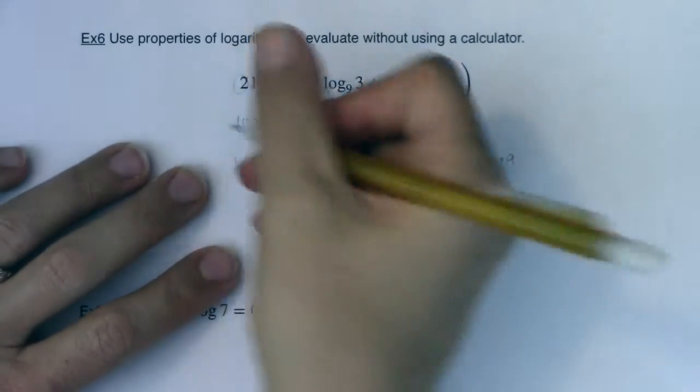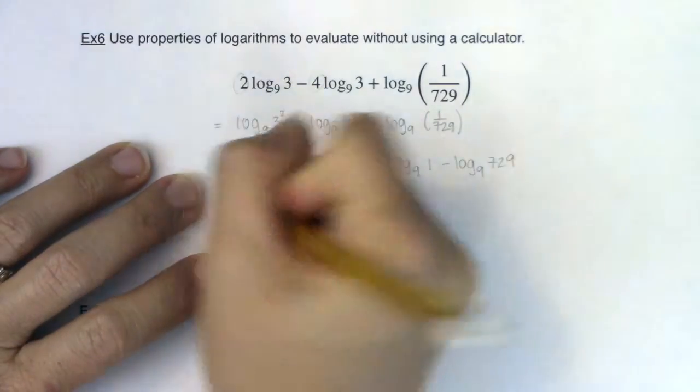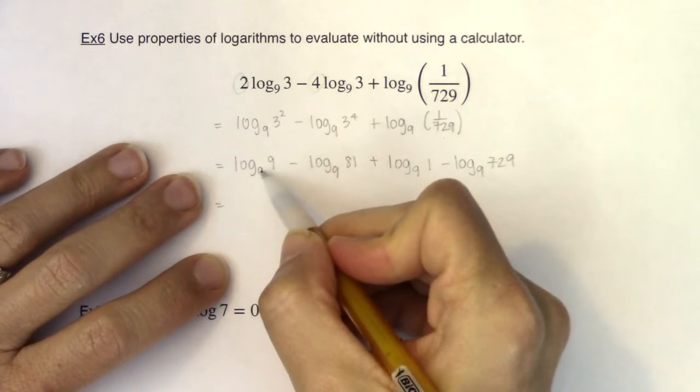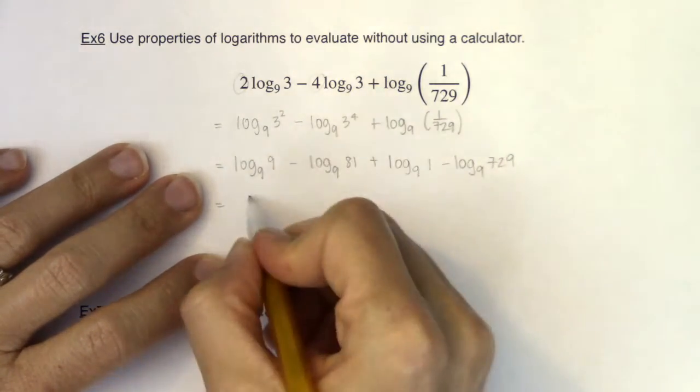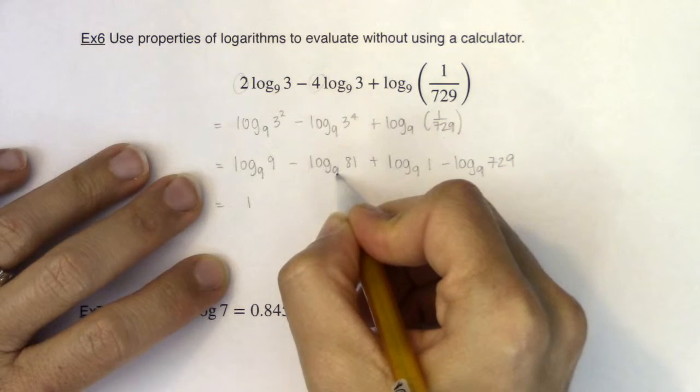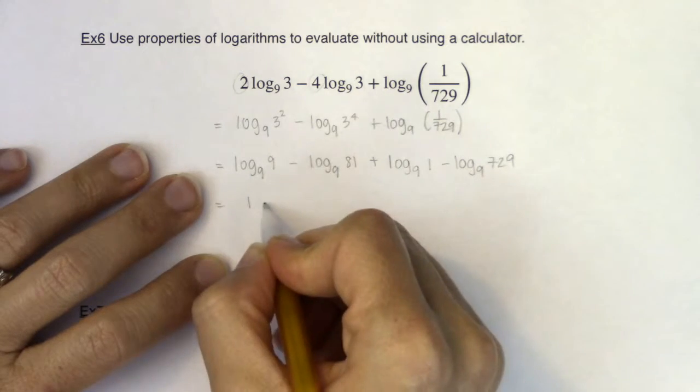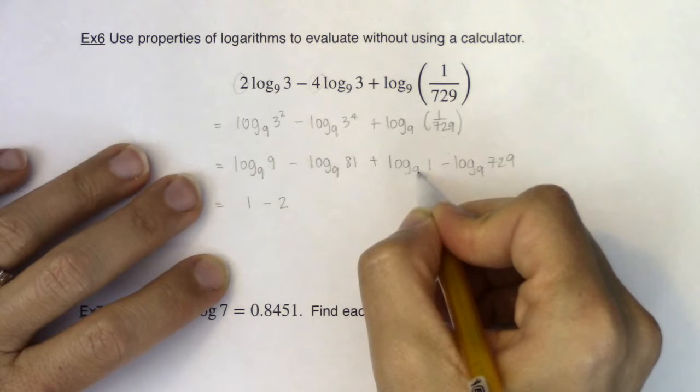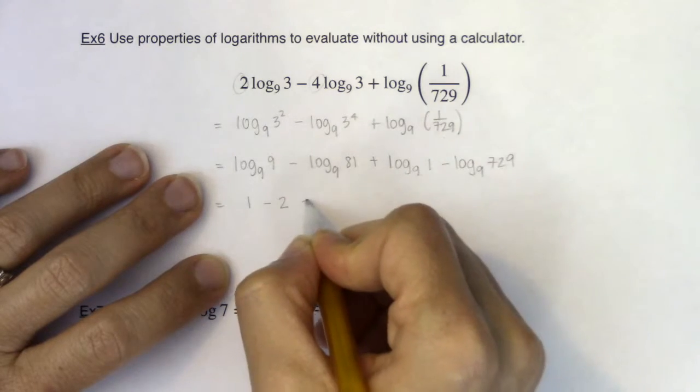So let's go through and talk about what's happening here. Logarithms are exponents. So what's the exponent you need on 9 to get to 9? 1. What's the exponent you need on 9 to get to 81? 2. What's the exponent you need on 9 to get to 1? 0.